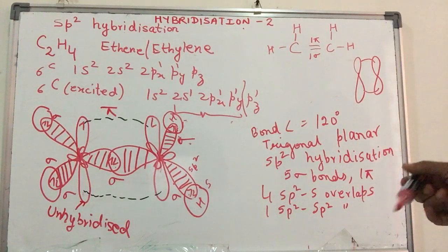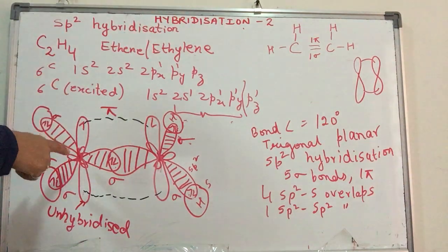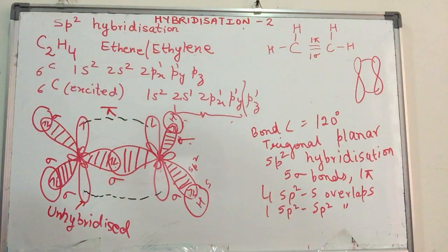So this should make the concept of sp2 hybridization a little more clearer. Greater clarity comes when you practice these diagrams yourself. Go step by step. Think for yourself. You know that there is a pi bond, so don't touch one of the p orbitals. And then try to draw the structures. You will find it much easier.